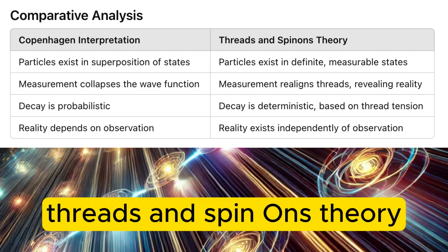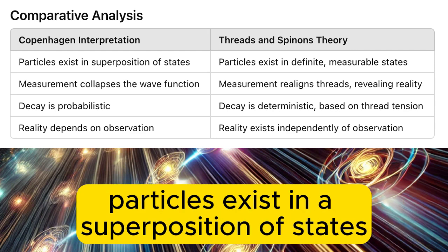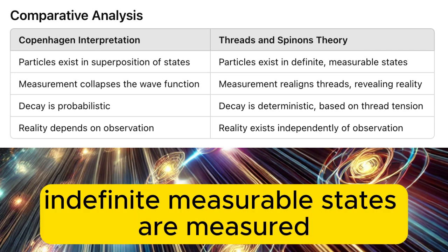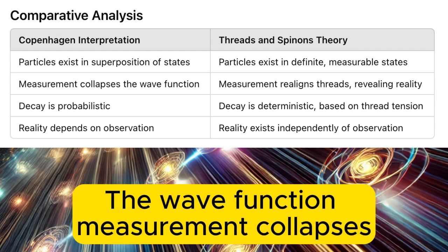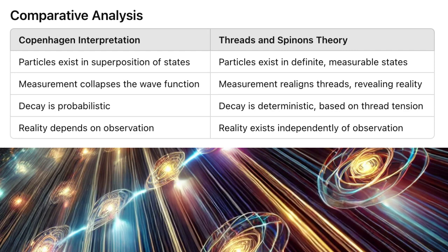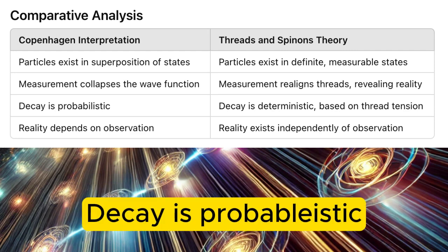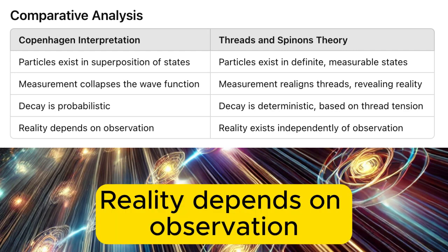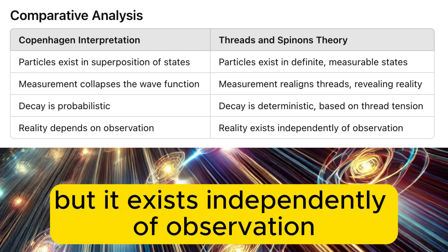In a comparative analysis: under the Copenhagen interpretation, particles exist in a superposition of states and measurement collapses the wave function. Under the threads and spin-ons theory, particles exist in definite measurable states, and measurement realigns threads to reveal reality. Decay is probabilistic under Copenhagen, but deterministic based on thread tension in this theory. Reality depends on observation in Copenhagen, but exists independently of observation in threads and spin-ons theory.